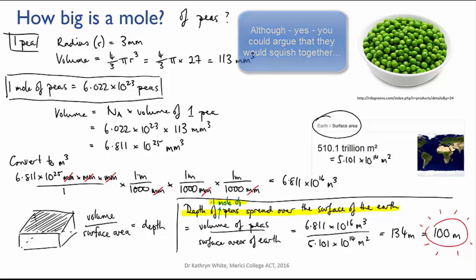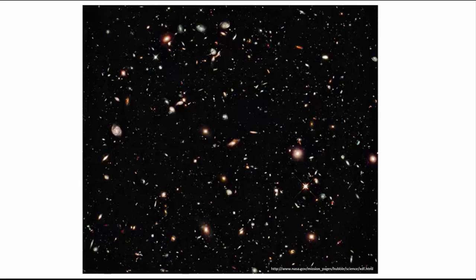So can you see now that a mole is a very large number and the point of it is for counting really, really tiny things? There's no point using it to skip count big things. Even an estimate of the number of stars in the entire universe only comes to about a tenth of a mole.